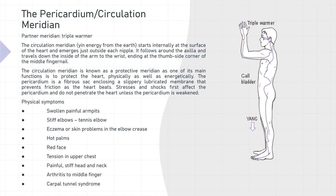The physical symptoms associated with pericardium circulation meridian imbalance are swollen, painful armpits, stiff elbows and muscles such as tennis elbow, eczema or skin problems in the elbow crease, hot palms, a red face, tension in the upper chest, painful stiff head and neck, arthritis to the middle finger, and carpal tunnel syndrome.